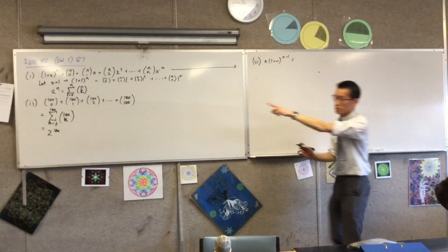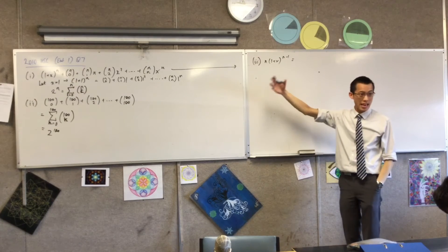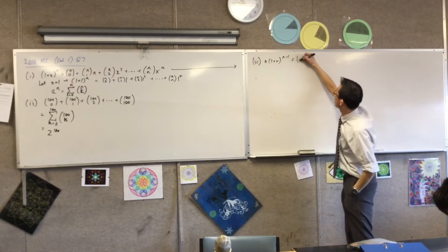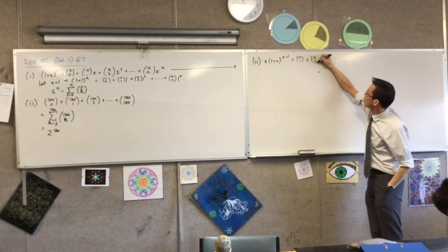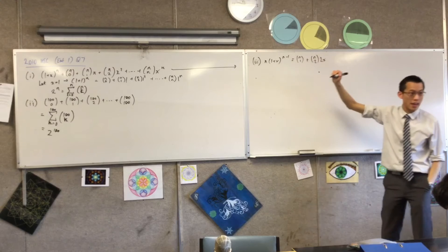nC1 times x, that just becomes nC1, right? What about the next term? Plus 2nC2. Okay, so I'm just going to put that there, right? That's the x squared. I want to establish a pattern.